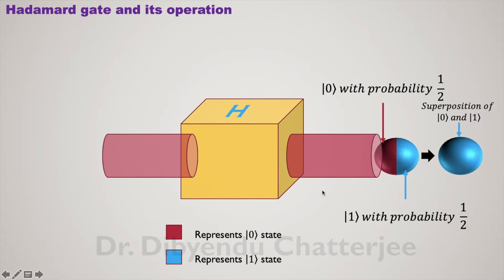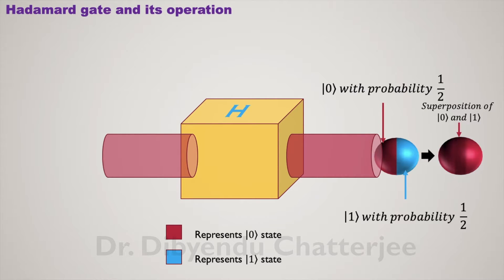What does superposition of two states look like? The ball represents superposition — you cannot determine whether the ball is ket 0 or ket 1. It blinks, showing superposition of red and sky blue, that is ket 0 and ket 1. If we measure this state, we will get ket 0 half the time and ket 1 half the time theoretically. If we measure 10 times, we may get 6 times red or 4 times sky blue. But as we increase the number of measurements, the probability of getting each color approaches one-half.